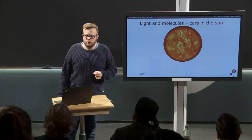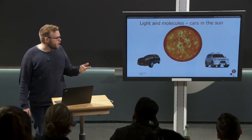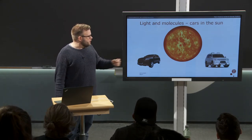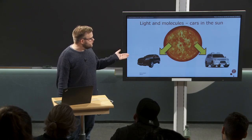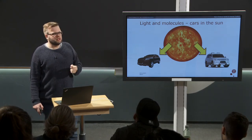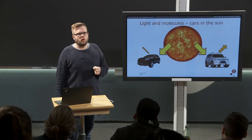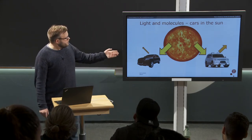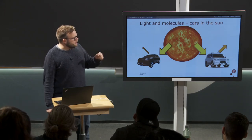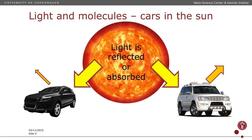We do that by returning to our primary light source, the sun. So if we place two cars in the sun — a black car and a white car — we all know that the black car will be significantly warmer to touch than the white car. That's because even though both cars are exposed to the same amount of radiation, the black car absorbs a lot more of the light. The white car reflects more light. So that gives us the two first processes: when light hits an object, it can either be reflected or absorbed.